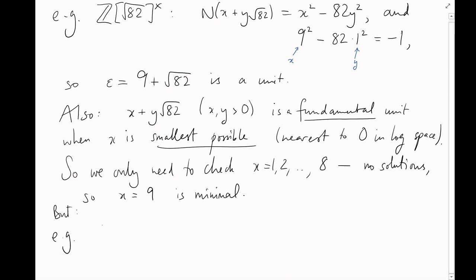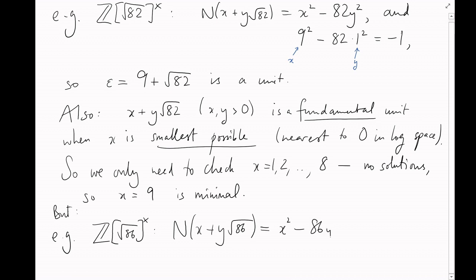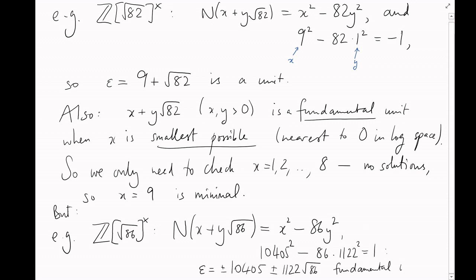On the other hand, in ℤ[√86], where the element x + y√86 has norm x² − 86y², it's not obvious where to even start finding any units at all. The fundamental units for this ring are plus or minus 10,405 plus or minus 1,122√86. So guesswork doesn't always seem to be a feasible option.